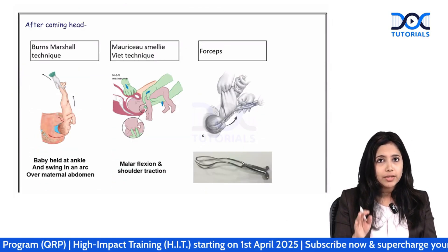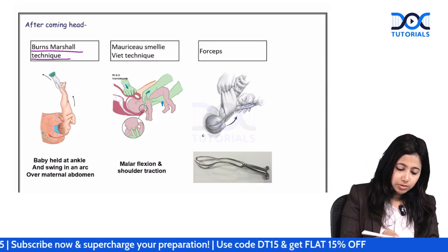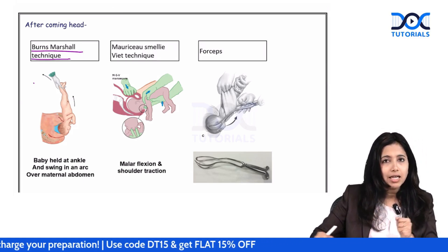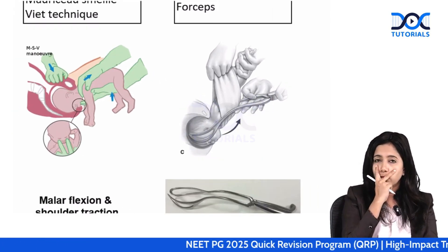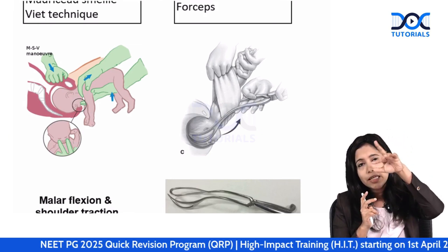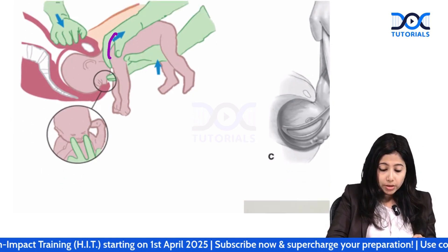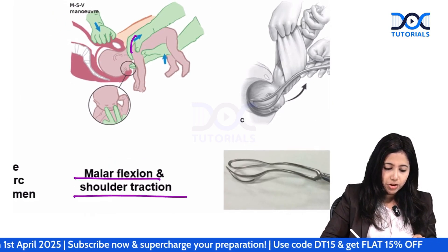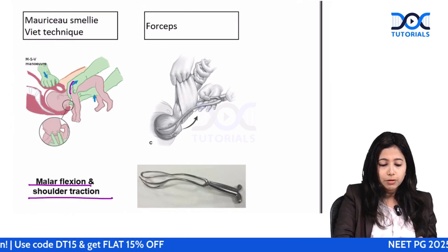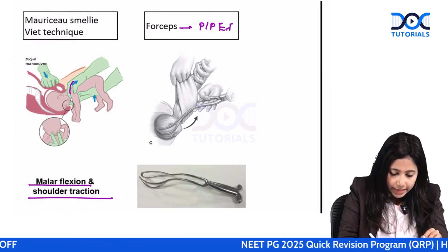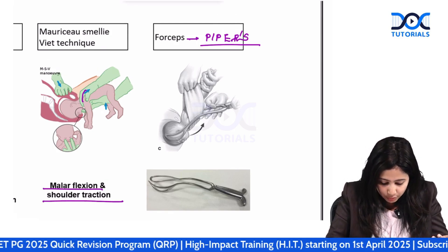For delivery of the head there are three maneuvers. First, Burns-Marshall maneuver: the baby is held at an angle and swung in an arc across the mother's abdomen — it can come as an image-based question. Second, Mauriceau-Smellie-Veit technique: two fingers are placed on the malar eminence, the other hand is over the neck with fingers on the nape, applying malar flexion and shoulder traction. Third, Piper's forceps can also be used.